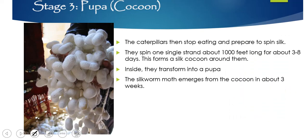Then we have the cocoon or chrysalis or pupa stage. That is when the caterpillars stop eating — they're full, just like in the very hungry caterpillar — and they prepare to spin the silk. Remember, the silk is what their cocoon is made of. They spin one single strand about 1,000 feet long for about a week, so three to eight days, and this is what forms the cocoon around them. Then inside they transform, and about three weeks later the moth comes out.